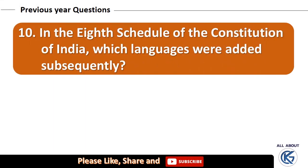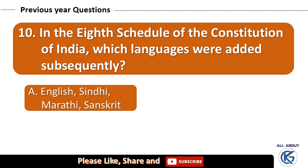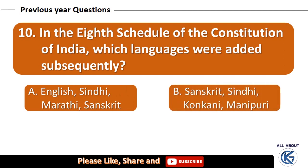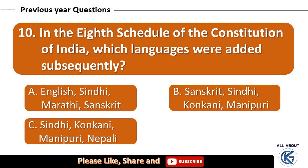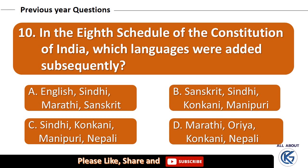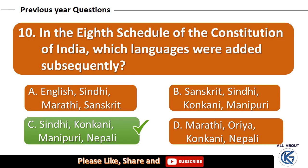In the 8th schedule of the Constitution of India, which languages were added subsequently? Options: English and Sindhi; Sanskrit, Sindhi, Konkani, and Manipuri; Sindhi, Konkani, Manipuri, and Nepali; or Marathi, Uriya, Konkani, and Nepali? The right answer is Sindhi, Konkani, Manipuri, and Nepali.